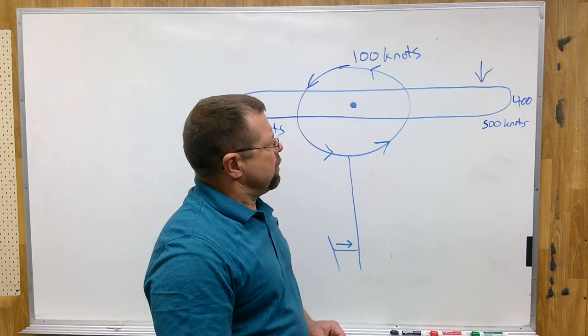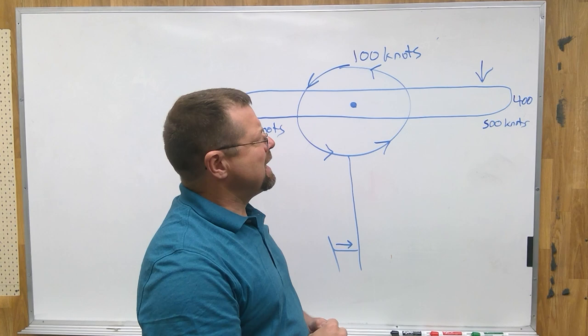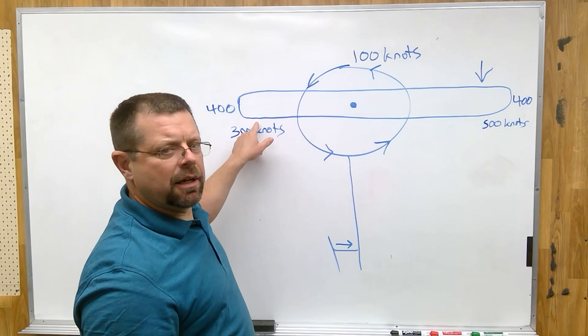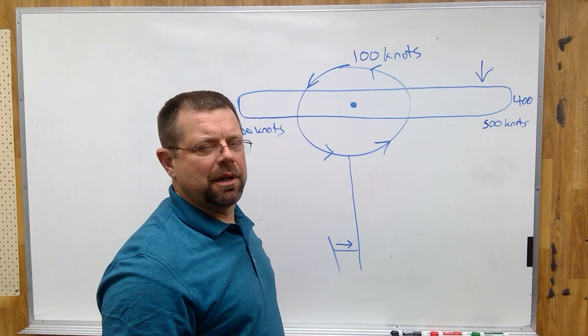So the relative wind that is affecting these blades is creating a different angle of attack. You've got a greater angle of attack on the advancing side, and a smaller angle of attack on the retreating side.